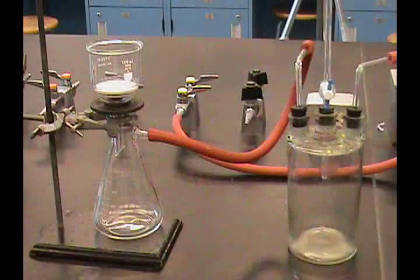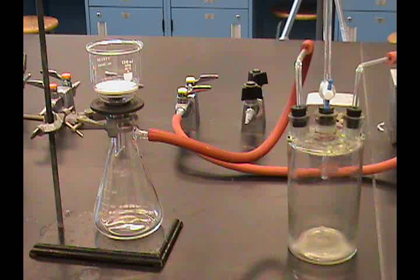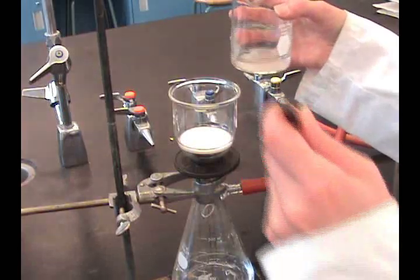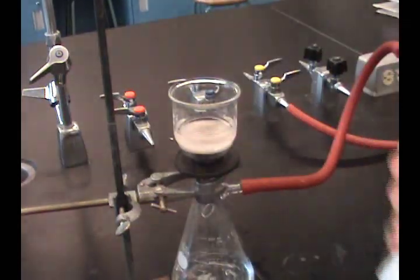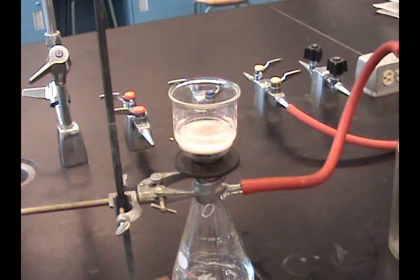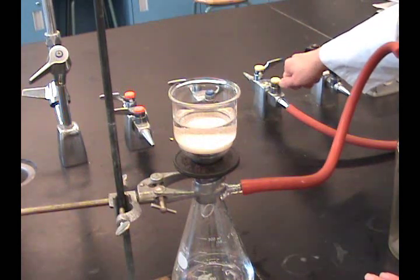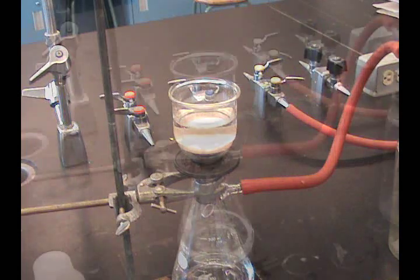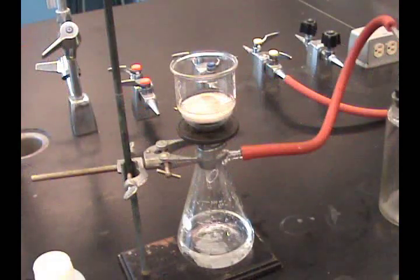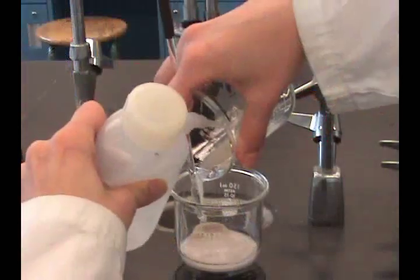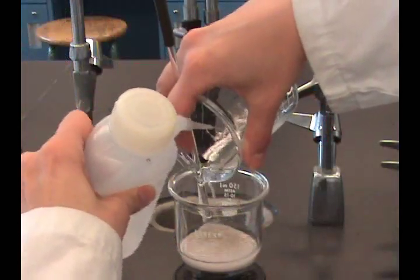If using a glass sintered funnel, no filter paper is needed, but the washer is to ensure proper seal. Pour the solution into the center of the funnel and slowly apply vacuum. Use a policeman to help transfer and rinsing should be done as well.